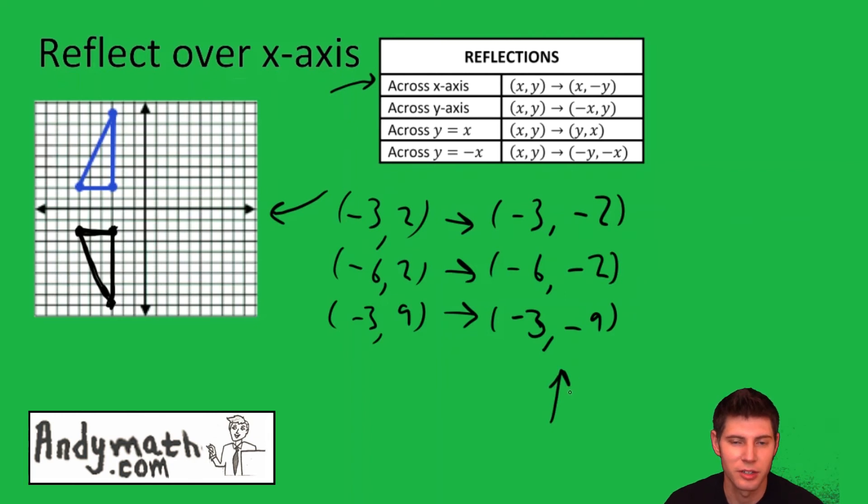Then we're going to plot these new points that we got through the transformation. Negative 3, negative 2 is this point right here. Negative 6, negative 2 is this point. And negative 3, negative 9 is this point. We've now used the transformation to do what we did with our eyes at the beginning of the problem.